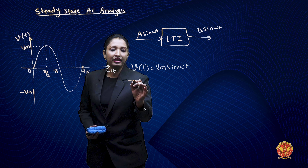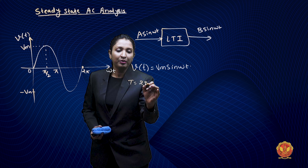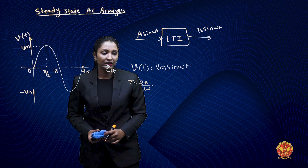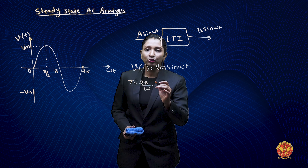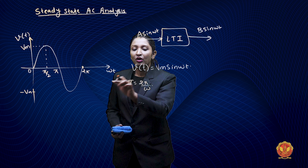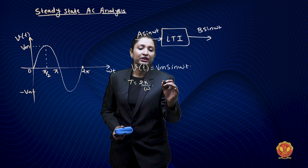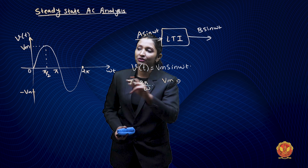What is ω? It is the angular frequency. What is the time period? It is T equals 2π divided by ω. So ω equals 2πf. What is Vm? Vm is the maximum value, or peak value, of this waveform.